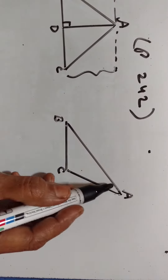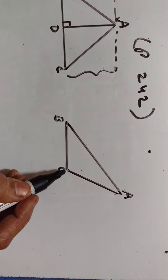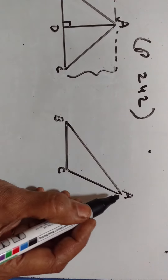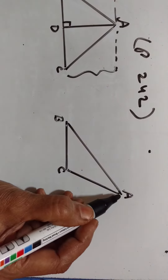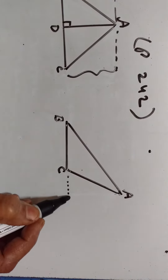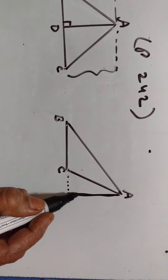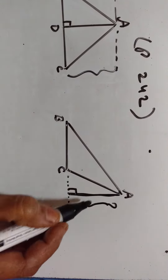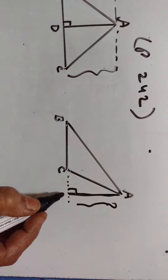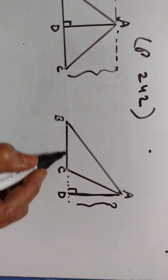Here in triangle ABC, BC is the base. What is the height? The perpendicular distance from the opposite vertex A. How to draw the perpendicular from A to BC? Extend it and drop a perpendicular. This is the height of this triangle. If it is AD, then AD is the height of this triangle ABC.